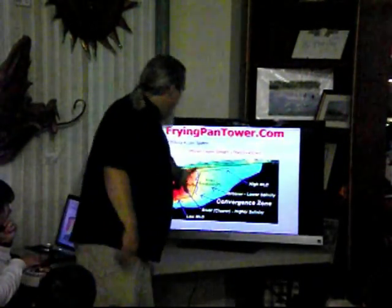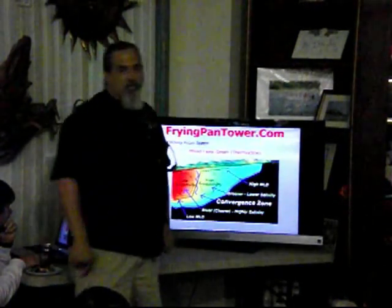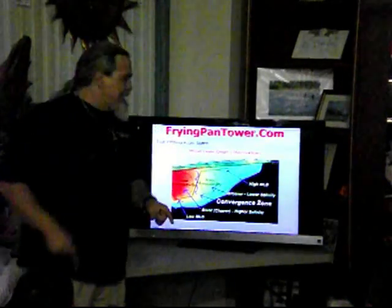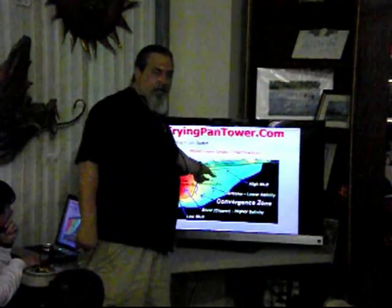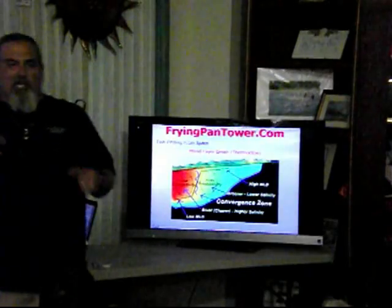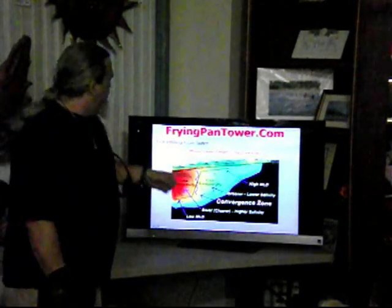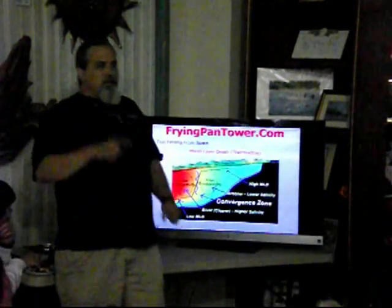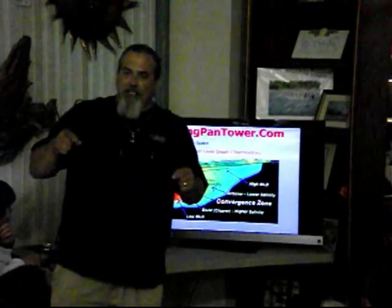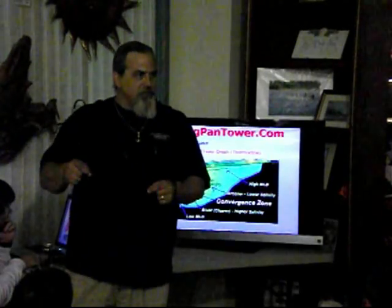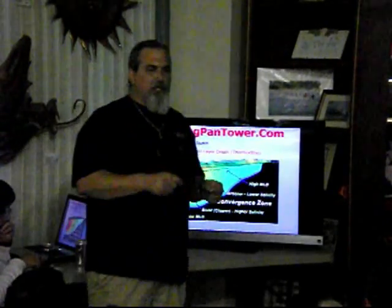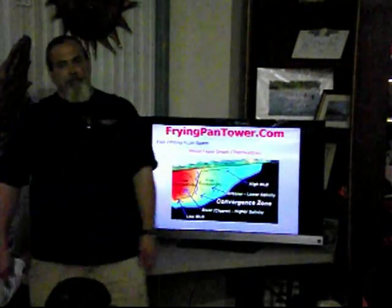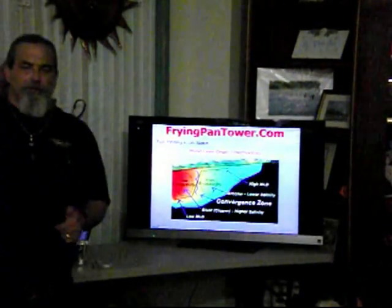High and low — and this wall right here is the convergent zone. The reason you guys were fishing that SST break and not catching fish was the SST break started up here right above the convergent zone, and we had a bunch of current that day that pushed it a mile one way or the other. That's why the SST break is a symptom of the convergent zone, not the convergent zone itself. What you're seeing on the surface gets pushed one way or the other — this doesn't. And it's called mixed layer depth.